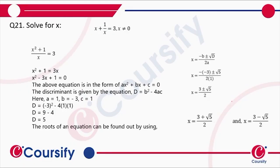Next we have solve for x: x + 1/x = 3. So first, multiplying both sides by x, we get x² + 1 = 3x.